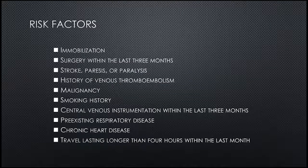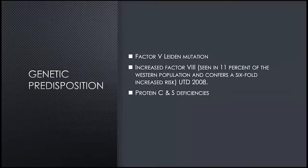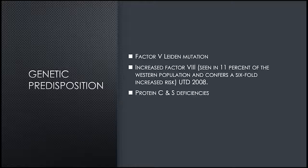We're all aware of the risk factors: immobilization, surgery, stroke, paresis, paralysis, history of prior venous thromboembolism, malignancy, smoking history, et cetera. Genetic predisposition is something we should also keep in mind. Factor V Leiden mutation is fairly common, and increased Factor VIII can also indicate genetic predisposition, as well as protein C and S deficiencies. Those proteins are involved in breaking down clots.